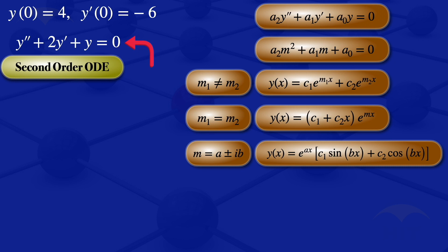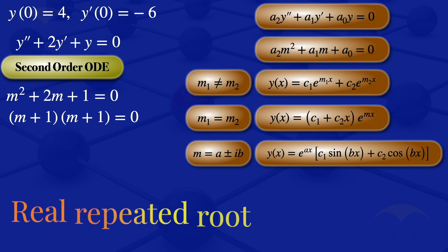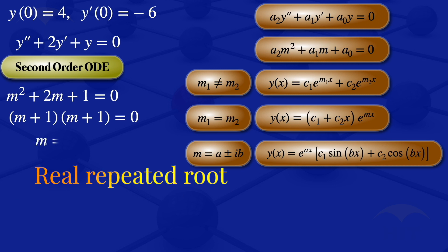In this case, looking at our equation, the auxiliary equation is m² plus 2m plus 1 equals 0. We can factorize this as (m+1)(m+1) equals 0, so we have a real repeated root: m equals minus 1.